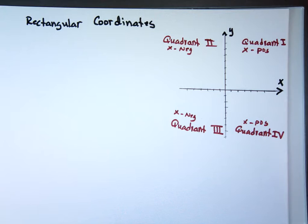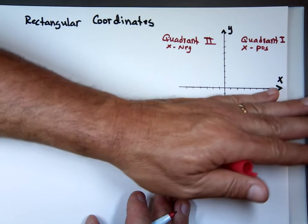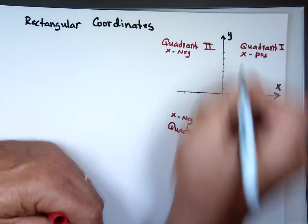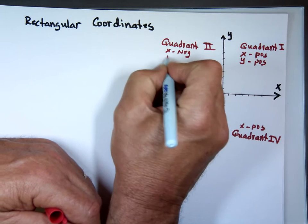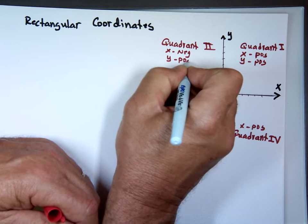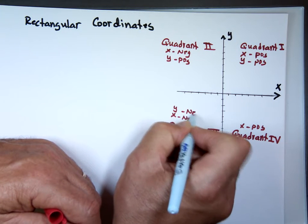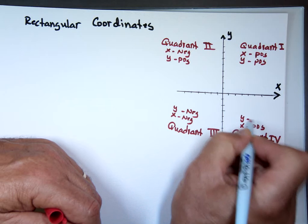The y value. Y is positive above the x-axis. Y is negative down. So y is positive here. Y is positive here. Y is negative here. Y is negative here.